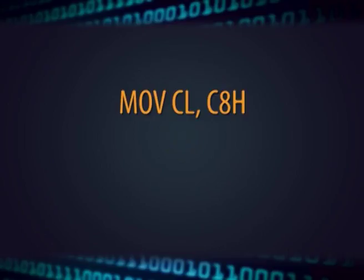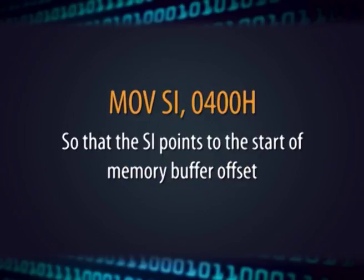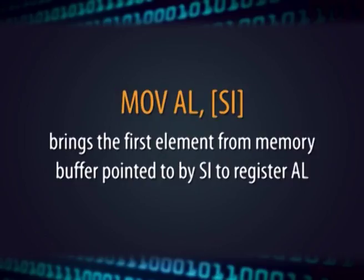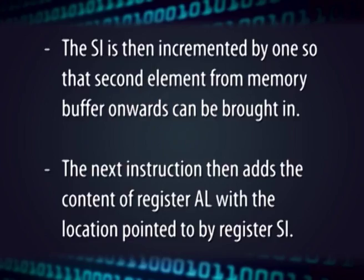In the next instruction sequence, we again initialize register CL to 200 decimal (C8H). We also initialize the source index register SI to 400H, so that it points to the start of the memory buffer offset. The instruction MOV AL, [SI] brings the first element from the memory buffer pointed to by SI into register AL. SI is then incremented by 1 so that the second element from the memory buffer onwards can be brought in.